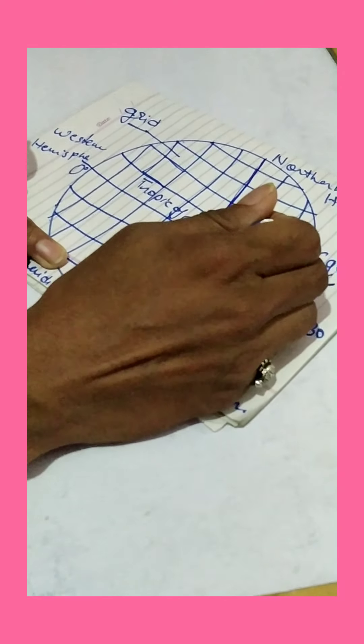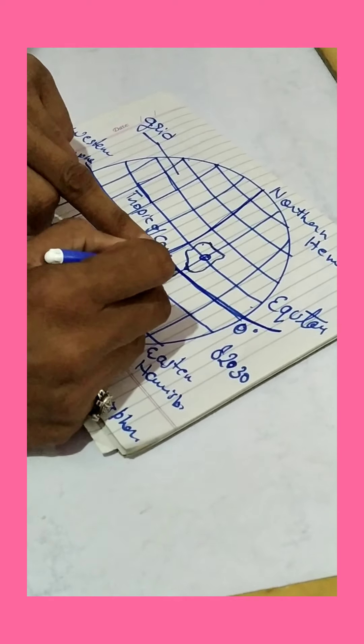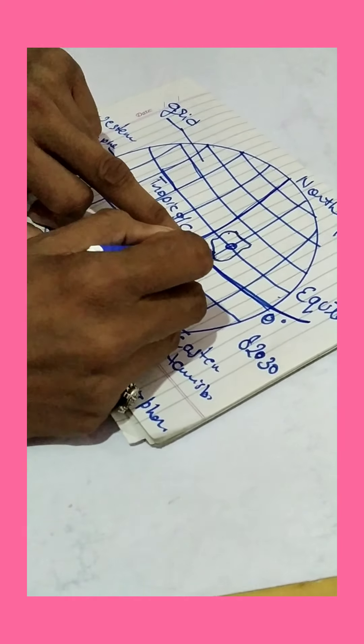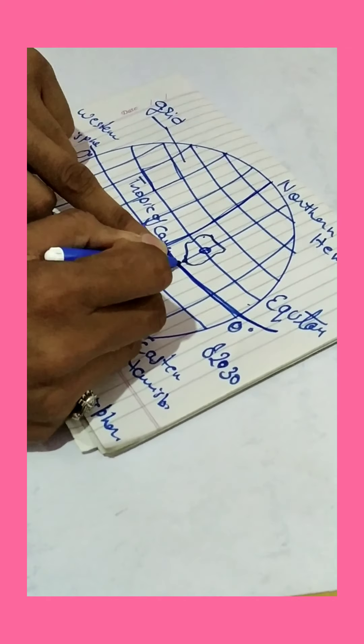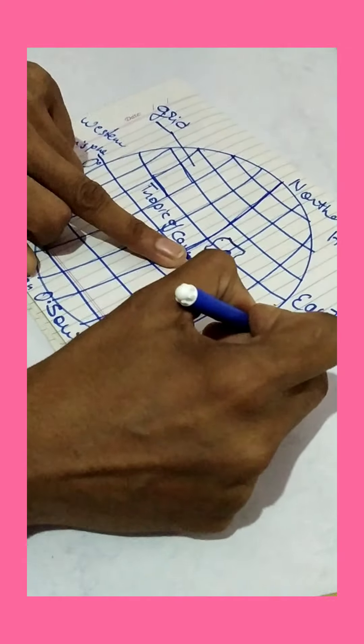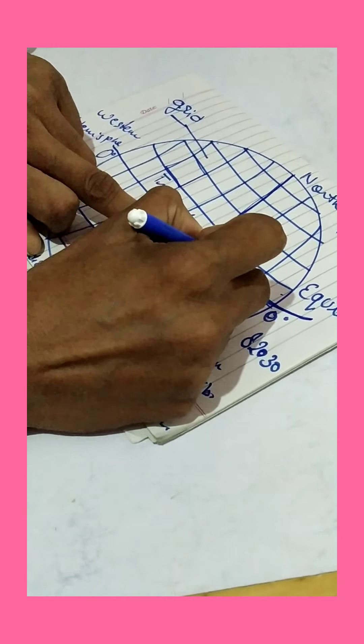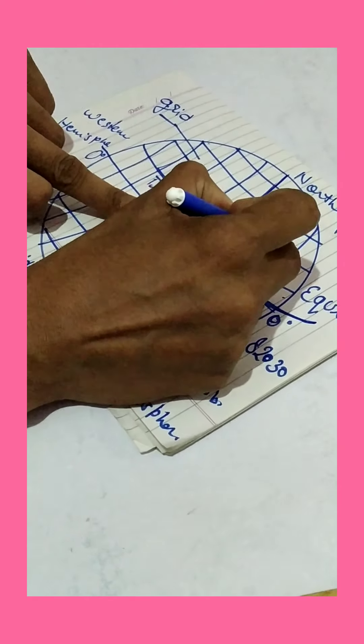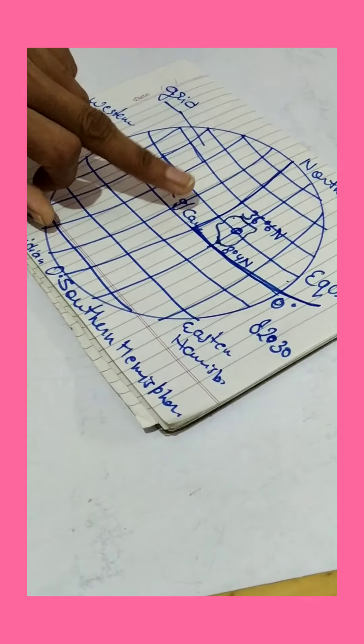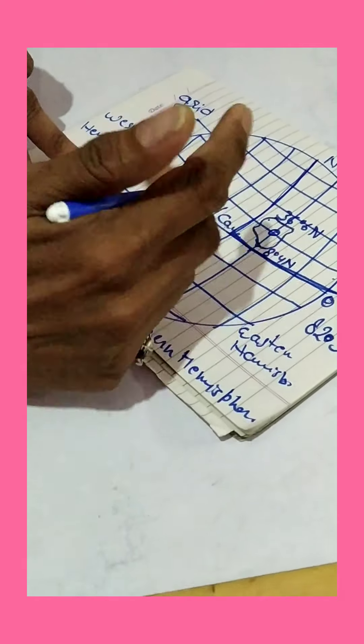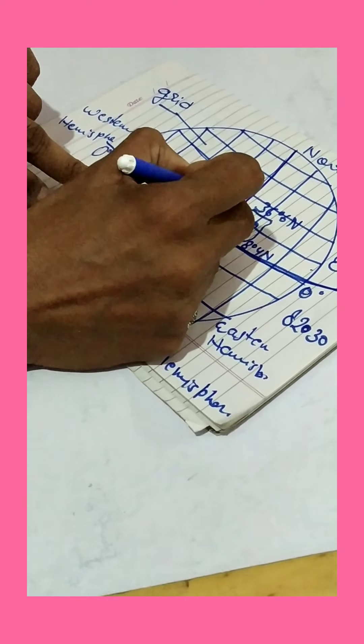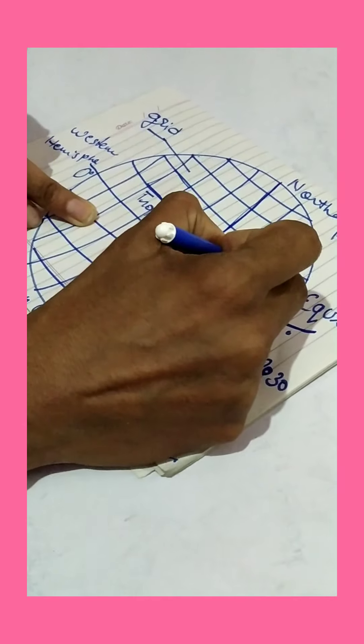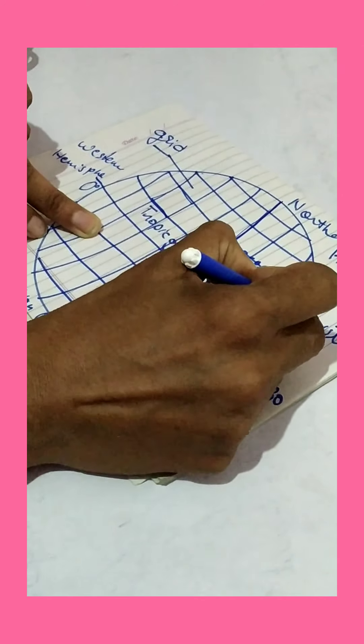The longitudinal and latitudinal extent of India: as we know that the equator is at 0 degree, our latitudinal extent starts from 8 degree 4 north to 36 degree 6 north. And longitudinal extent from 68 degree 7 east to 97 degree 25 east.